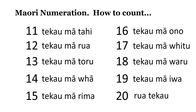We're going to count numbers from 11 to 20. We'll go through them one at a time to start with. So number 11, you say te kau mā tahi. Te kau mā is the ten — te kau is 10 — and then mā is to add 1: tahi.